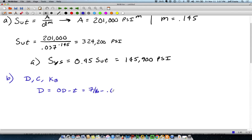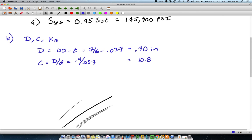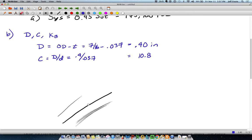C is just the mean coil diameter divided by the wire diameter. It's 10.8. The Bergstrasser factor kb for this case is 4C+2 divided by 4C-3. Plugging in C there, we get 1.124.